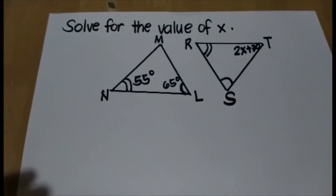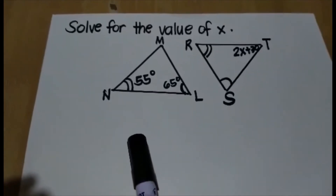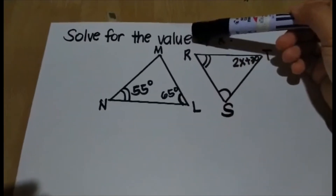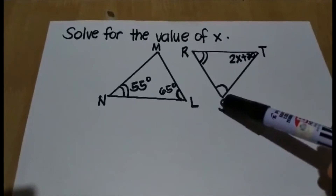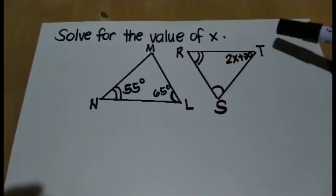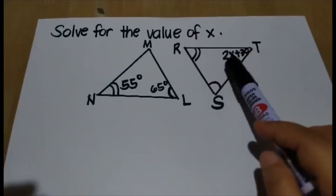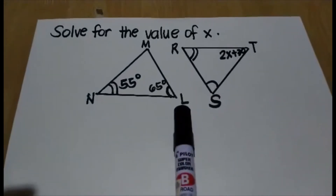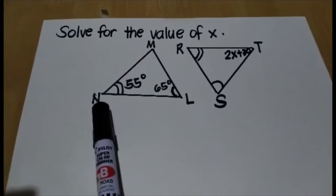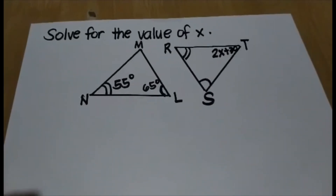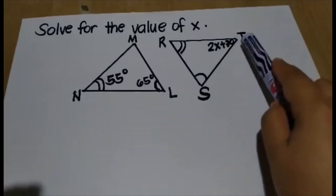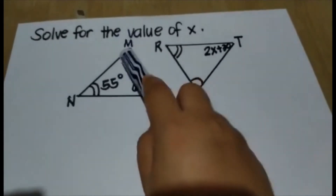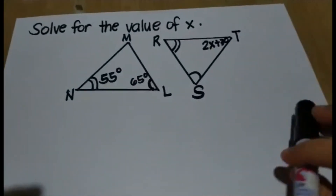Solve for the value of X. Looking at the figure, angle N is congruent to angle R, angle L is congruent to angle S, and angle M is congruent to angle T. Given that angle T is 2X plus 30, angle L is 65, and angle N is 55. Since T is congruent to angle M, we have to find first the measure of angle M — same concept as the second example.